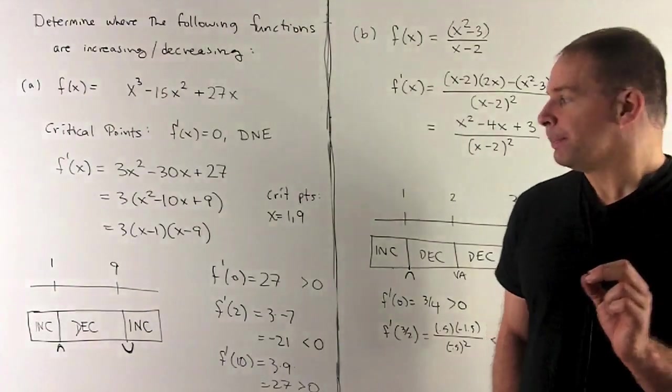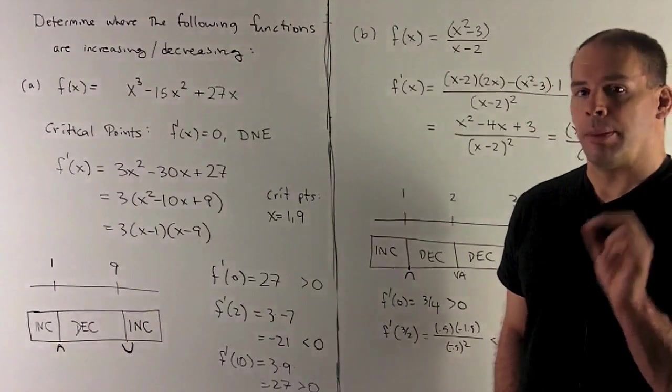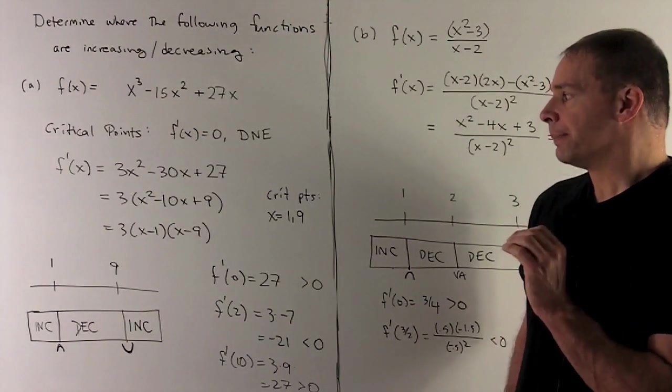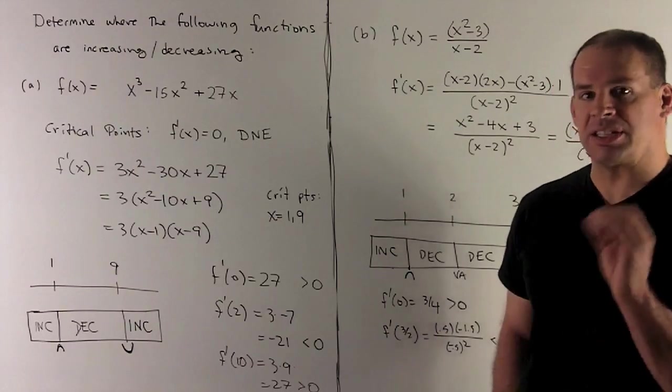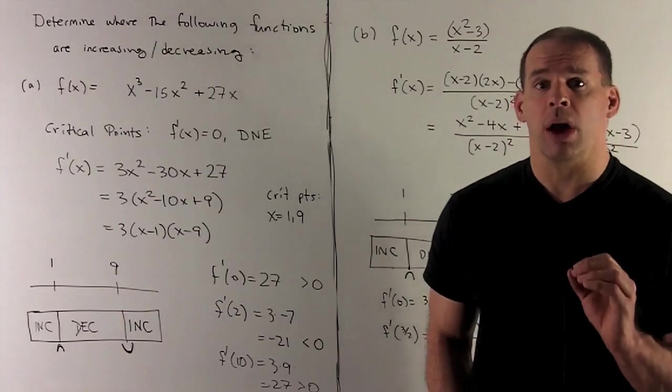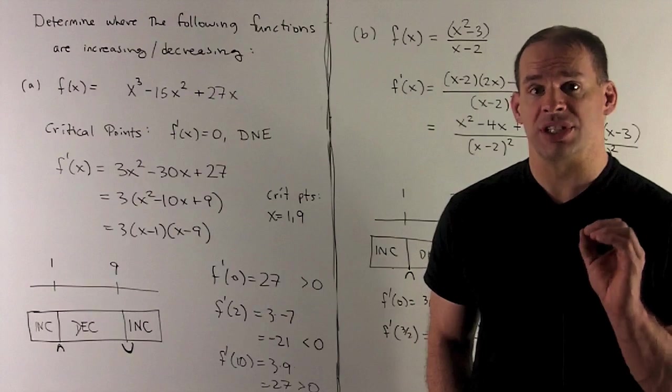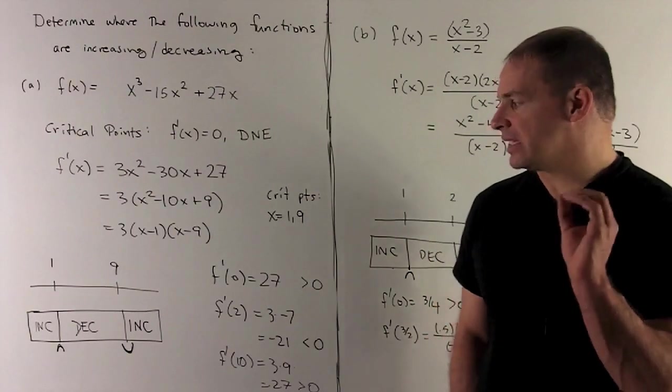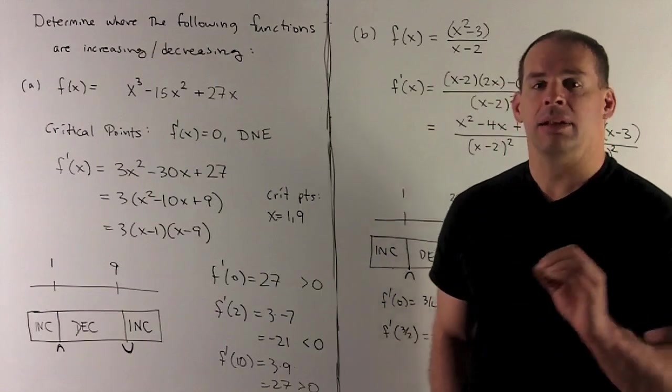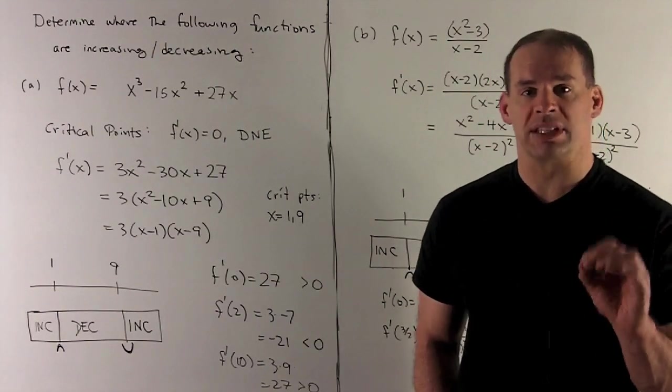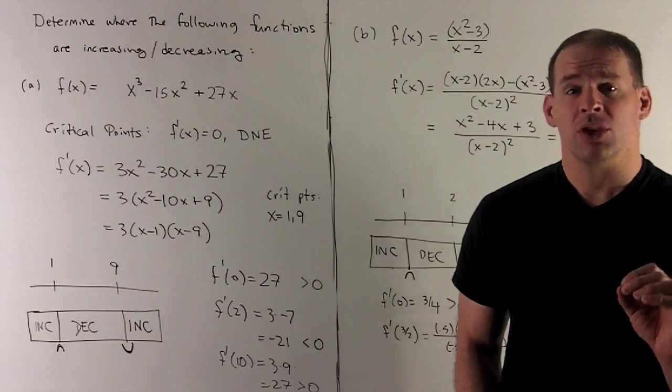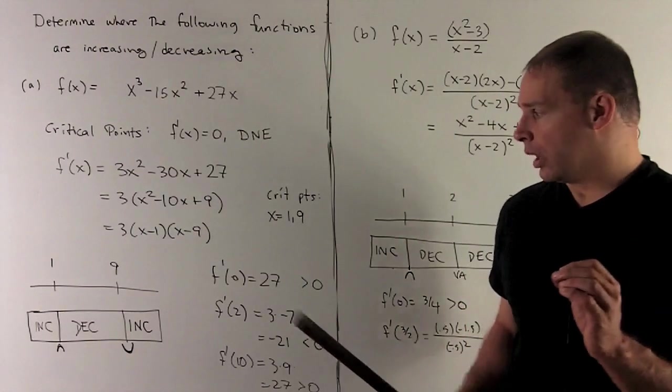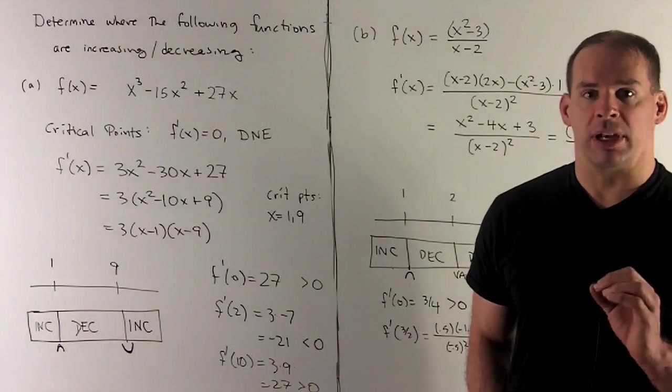Between 1 and 9, I'm going to use 2. I put that into my derivative. What comes out? Well, I'm going to have 3 times 1 times minus 7, which is minus 21. That's negative. So I'm decreasing in that region. And then on the other side of 9, I can try 10. That's going to give me 3 times 9 times 1, which is 27, which is positive. So I'll be increasing on the region x bigger than 9.